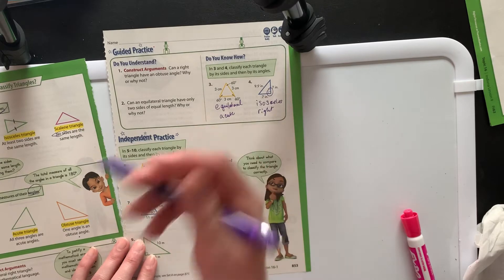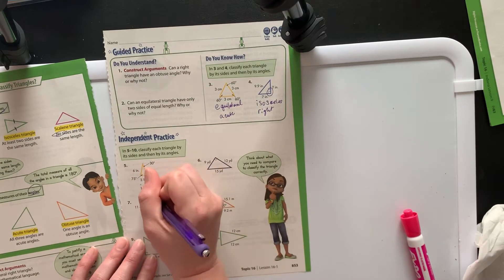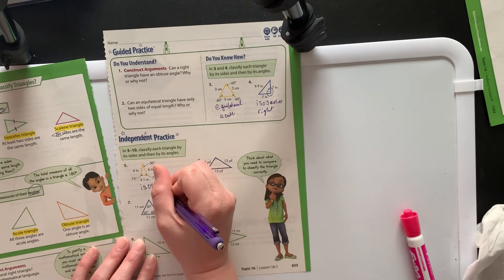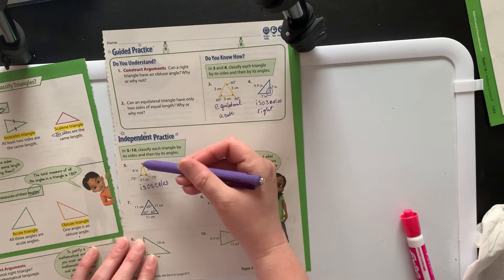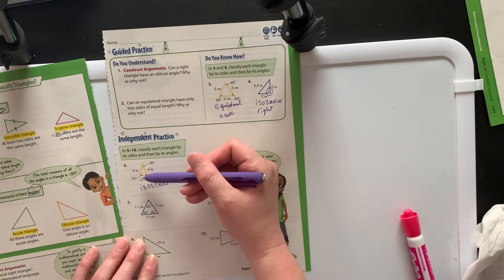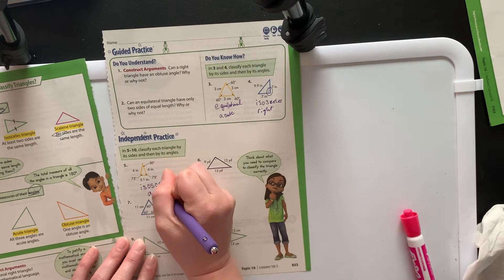Moving on, we have two 6 inches, so it has to be isosceles. And then for the angles, it looks like we've got a 30, a 75, and a 75. Those are all under 90, which makes them all acute.